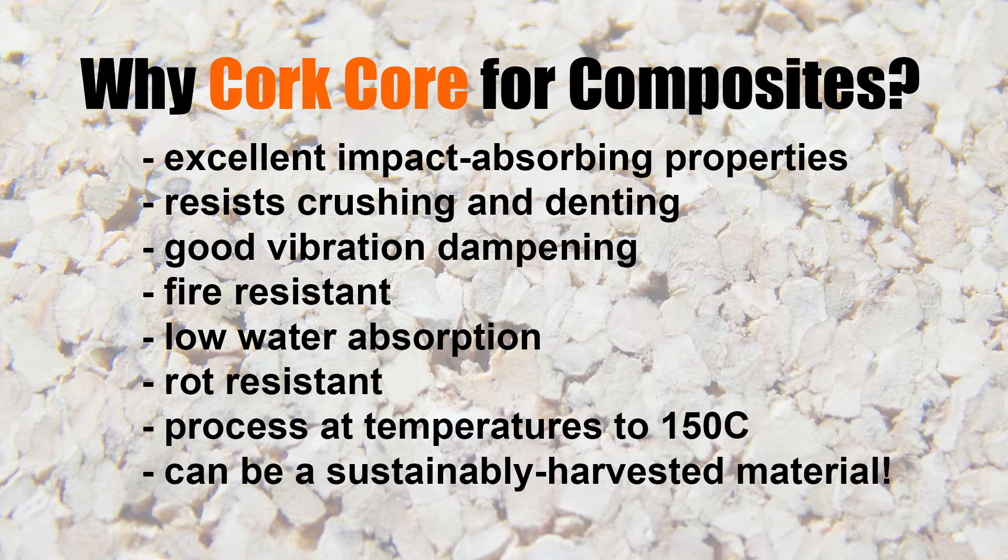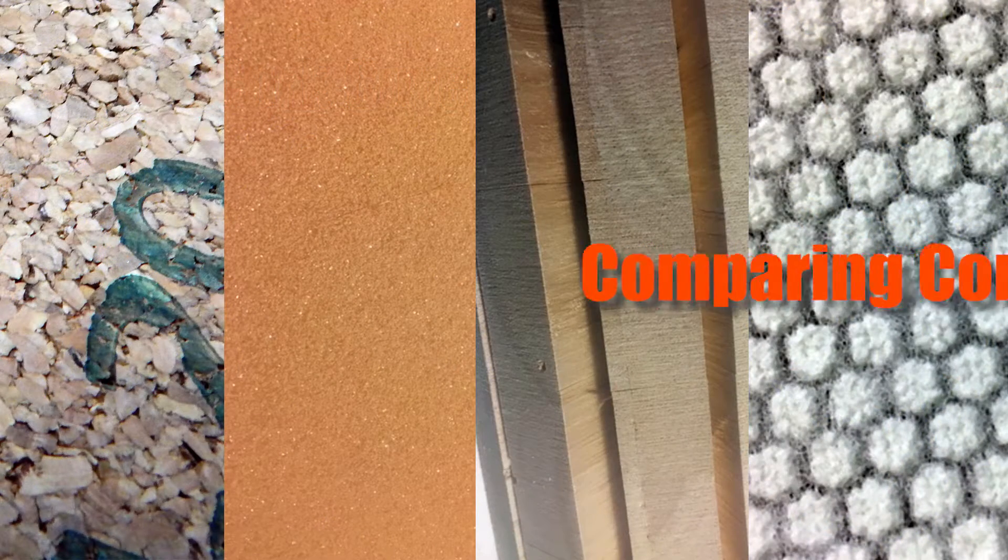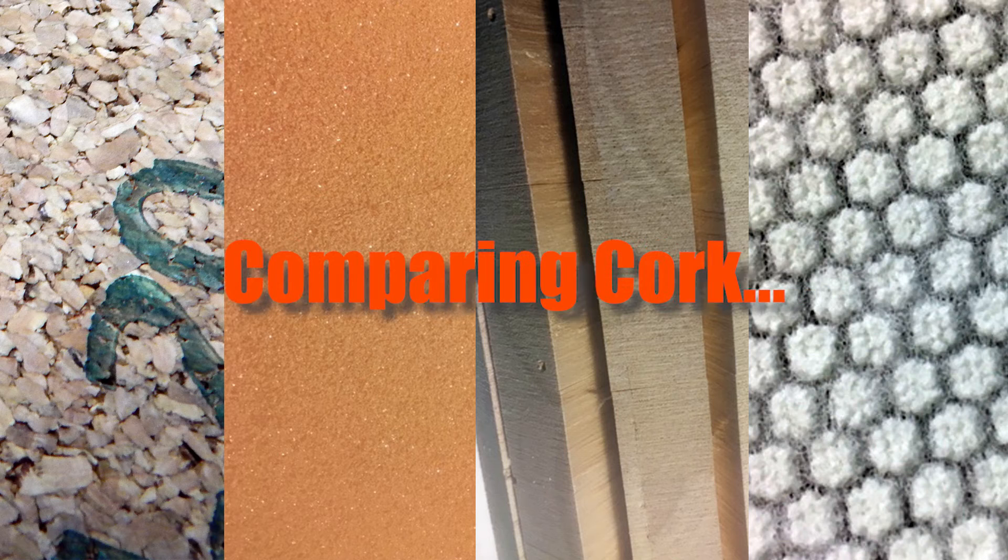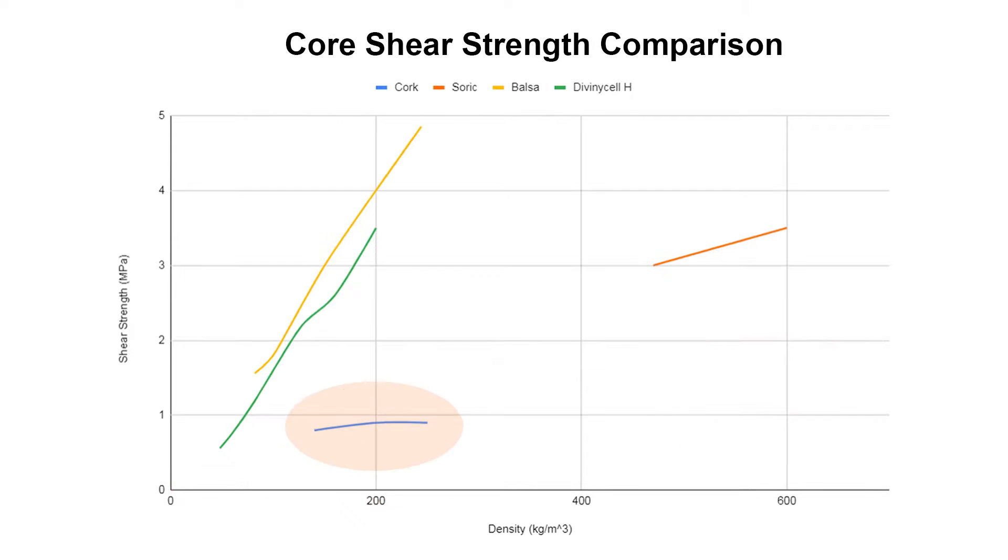Good impact resistance, resistance to denting and crushing, vibration dampening. Now we're going to compare it to some other more common materials with charts. You can see nothing remarkable. It compares more with a much lower density of Sorik than it does favorably to balsa or foam.